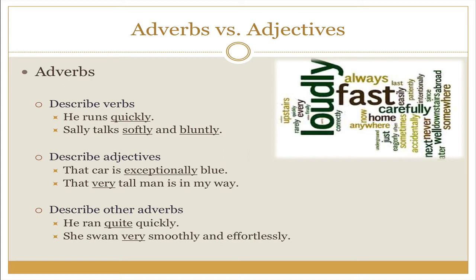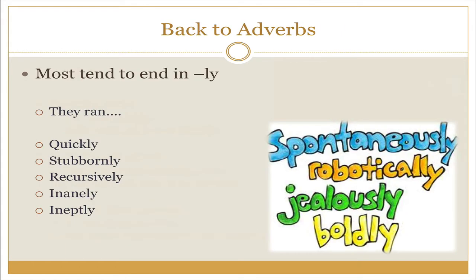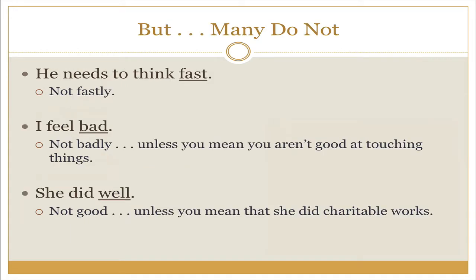Adverbs can be potentially pretty confusing. They can describe verbs, adjectives, and other adverbs. Many adverbs tend to end in -ly, so that is usually a good indicator that an adverb is being used. For example, they ran — how did they run? Quickly, stubbornly, recursively. Any of those words where we add -ly are probably serving as adverbs. But there are exceptions, of course, because it's English. Many adverbs do not end in -ly. For example, he needs to think fast. We would not say fastly.